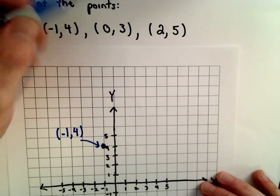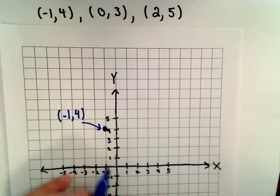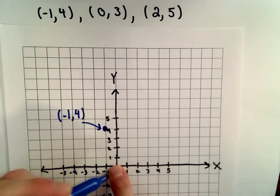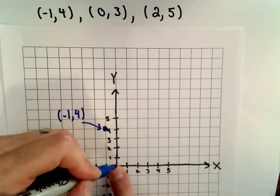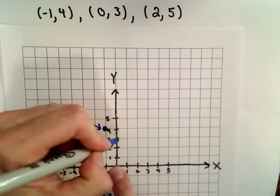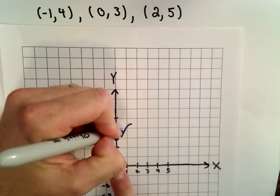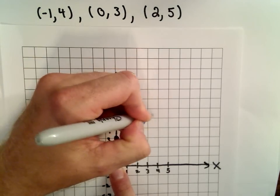The next point is (0, 3). The first coordinate says move 0 units, so don't move at all. The second coordinate is positive 3, so we'll move up 1, 2, 3. That dot represents the point (0, 3).